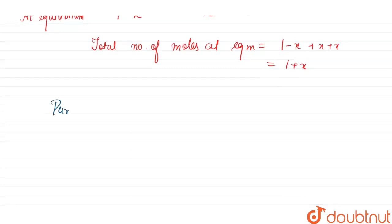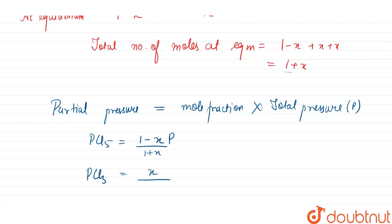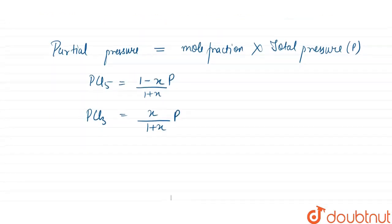We know that the partial pressure of a gas equals mole fraction into total pressure. So for PCl5, its partial pressure is [(1 - x) / (1 + x)] × P. For PCl3, it is [x / (1 + x)] × P. And for Cl2, it is [x / (1 + x)] × P, where P is the total pressure.